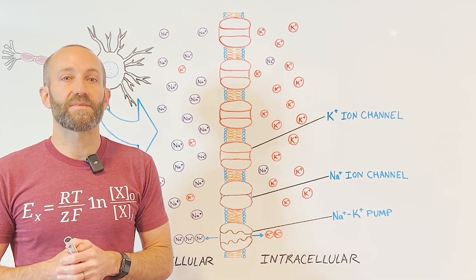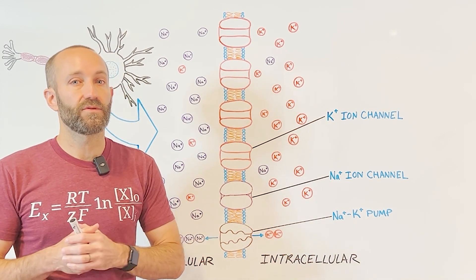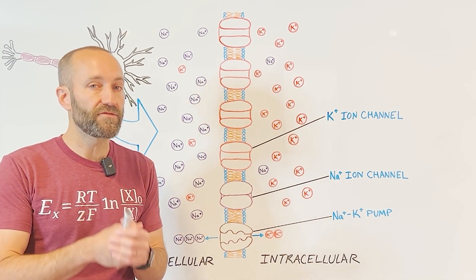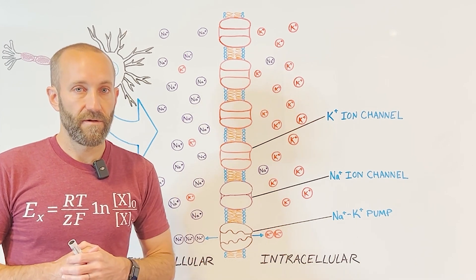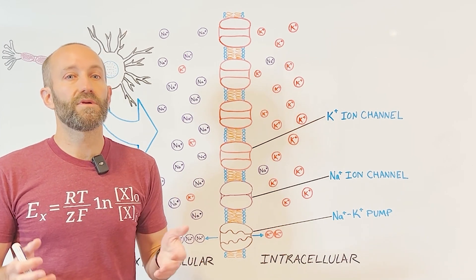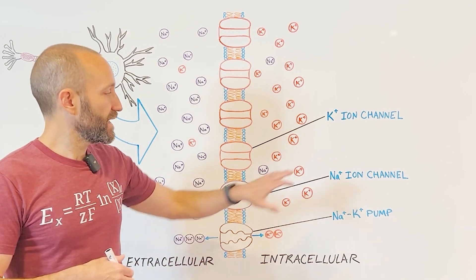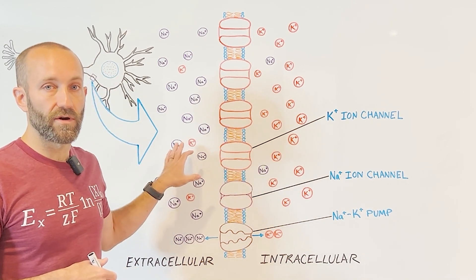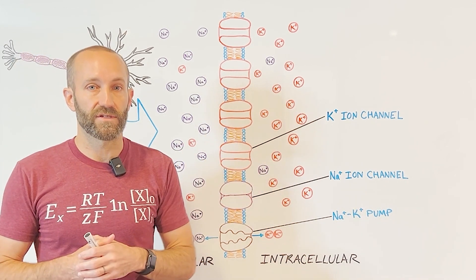Because of this, potassium is able to cross the membrane of a typical neuron relatively freely, but sodium can't. This will be important to determining how potassium and sodium get distributed inside and outside the neuron, but we also have to consider a few other factors.